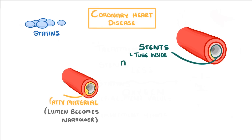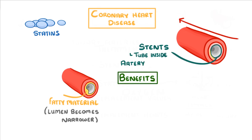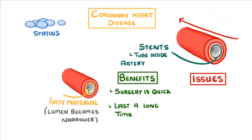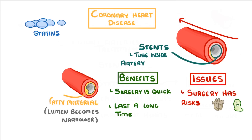The two main treatments for coronary heart disease are stents and statins. A stent is basically an expandable tube that we can place inside the arteries to hold them open, which ensures that the blood can keep flowing. The benefits of stents are that the surgery is relatively quick and they're effective for a long time. The downside though is they do require surgery, which always has risks — for example, the surgery could induce a heart attack or lead to an infection. There's also a small risk of the patient later developing a blood clot near the stent, which we call a thrombosis.